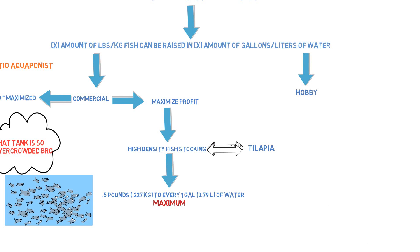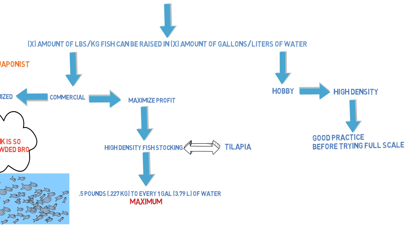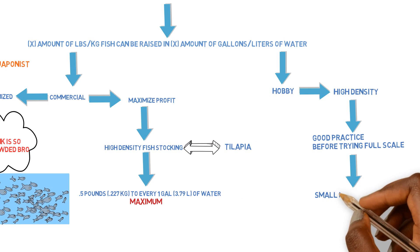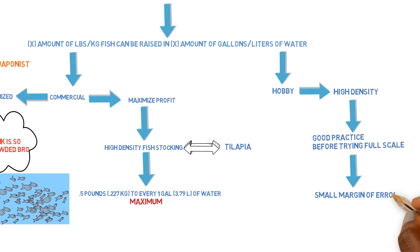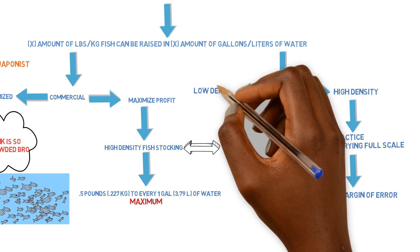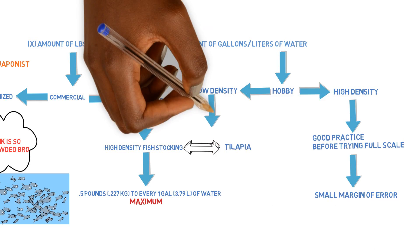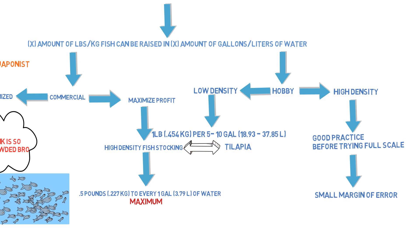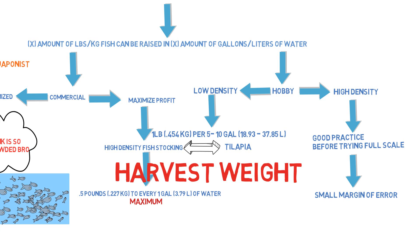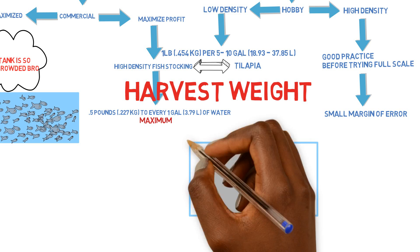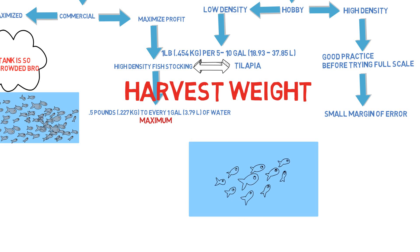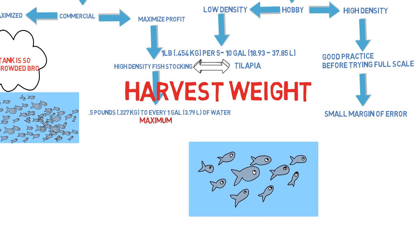If you're on a hobby level, you can test it out this way, but you'll need to be more attentive, as there's less margin for error when operating at high densities. A lot of people go with lower densities, like one pound for every five to ten gallons, which works out fine. To be clear, when we say half a pound per gallon, we're referring to the final weight of the fish — you don't initially stock at that rate. You stock at a lower rate and let the fish grow into that final stocking density.